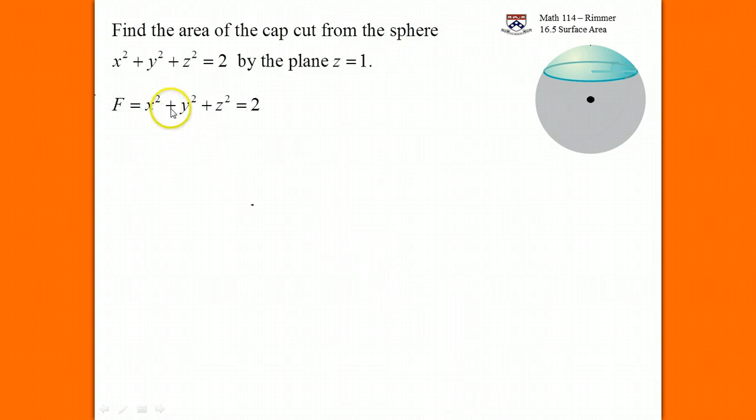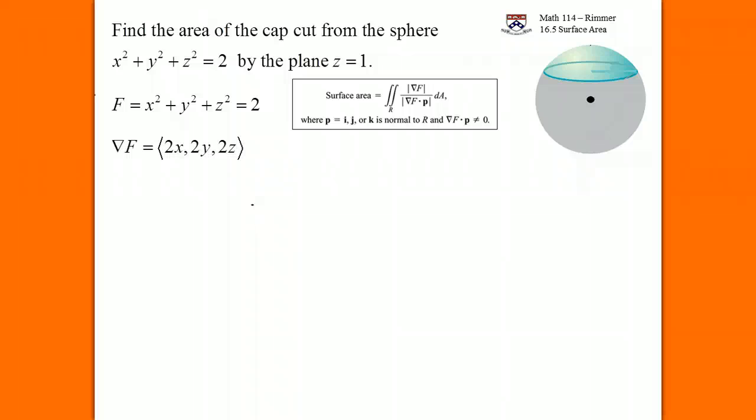We find what the F is. The function F of x, y, z is the sphere, x squared plus y squared plus z squared equals 2. The formula from the previous slide. We take the gradient of F and find its magnitude. So the gradient F is the vector made up of the partial derivatives with respect to x, y, and z respectively in the i, j, and k components. So 2x, 2y, and 2z.